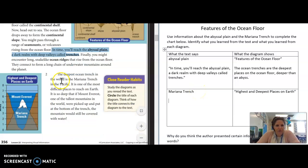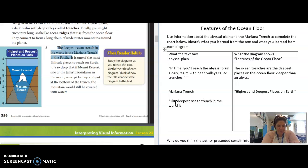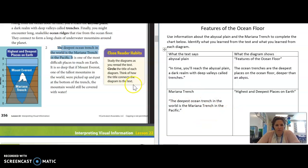Now we're going to switch over to the Mariana Trench. We know that was in the second section of the text. We learned that the deepest ocean trench in the world is the Mariana Trench in the Pacific. So that's exactly what I am going to copy here. The deepest ocean trench in the world is the Mariana Trench in the Pacific. It is one of the most difficult places to reach on earth. I could also include that here.